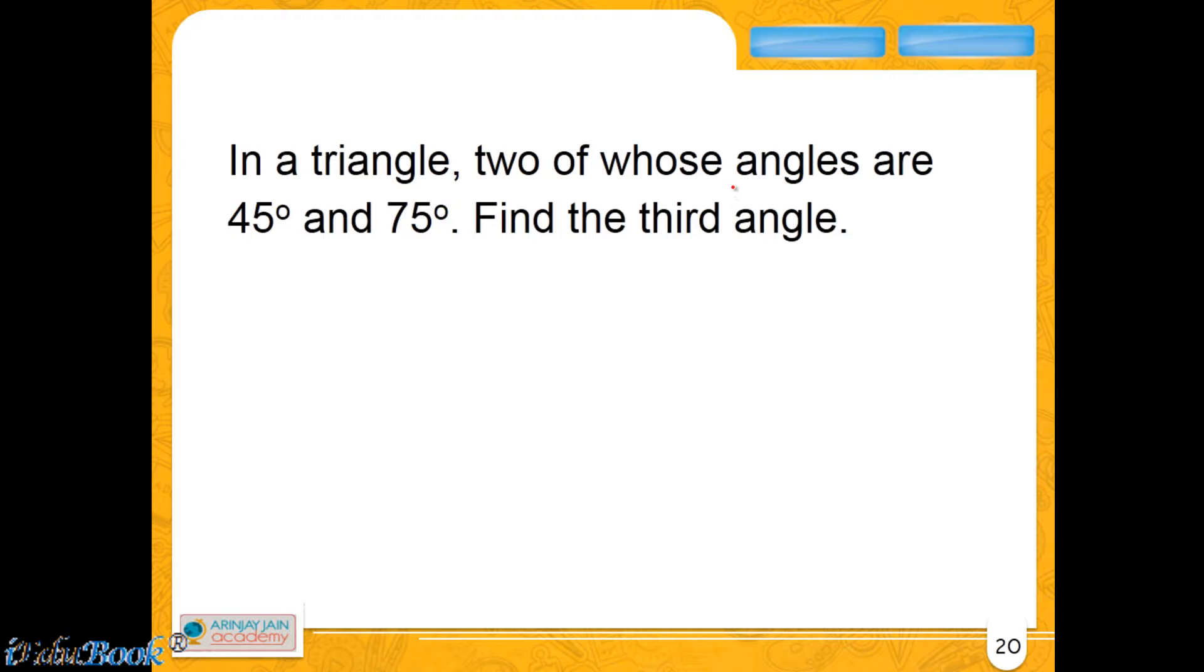In a triangle, two of whose angles are 45 degrees and 75 degrees, find the third angle. Like I told you, if there are three angles A + B + C, their total is equal to 180 degrees. You are told that one of the angles is 45 degrees, the other angle is 75 degrees. You need to find out what is the value of C when the sum of these three is equal to 180 degrees by virtue of the angle sum property of the triangle.